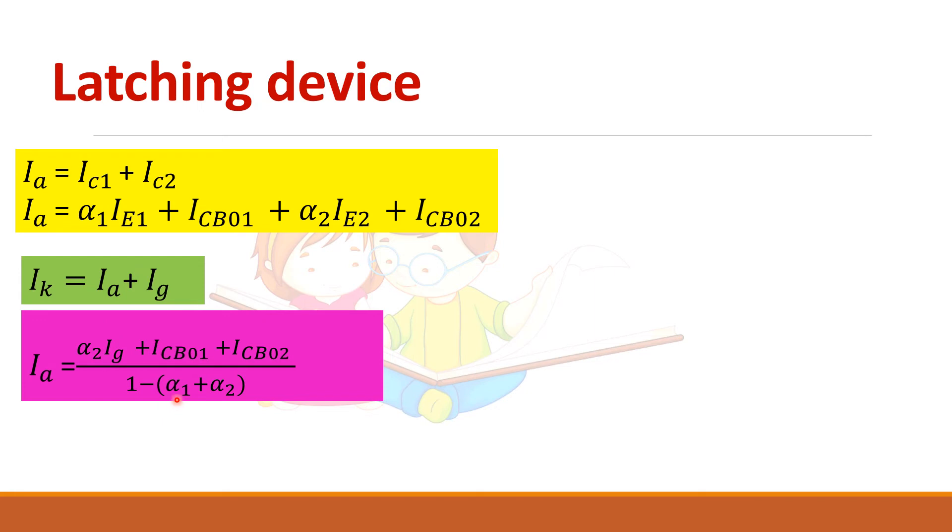So here you have in denominator alpha 1 plus alpha 2. So this is the current gain. So the current gain of a transistor increases with emitter current. So if emitter current increases, alpha will increase.